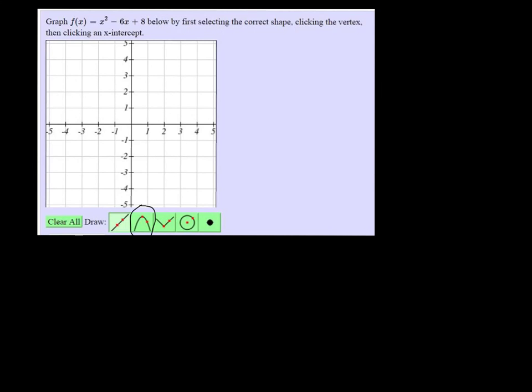You need the vertex and the x-intercept. So the vertex we find with negative b over 2a and f of negative b over 2a. That's the vertex.